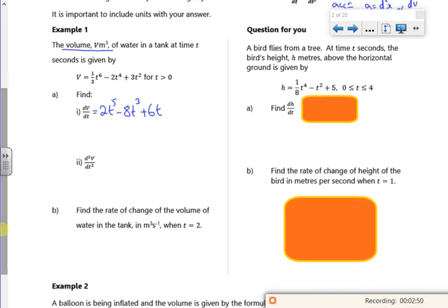And then differentiate it again. So my 2t⁵ becomes 10t⁴, minus 8t³ becomes minus 24t², and then I've got plus 6.